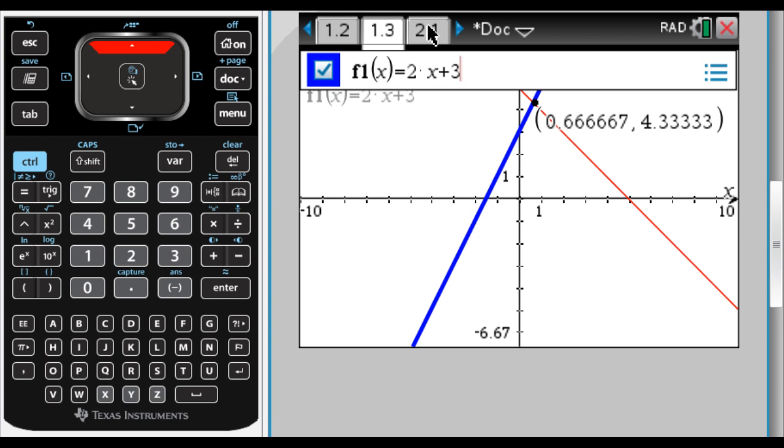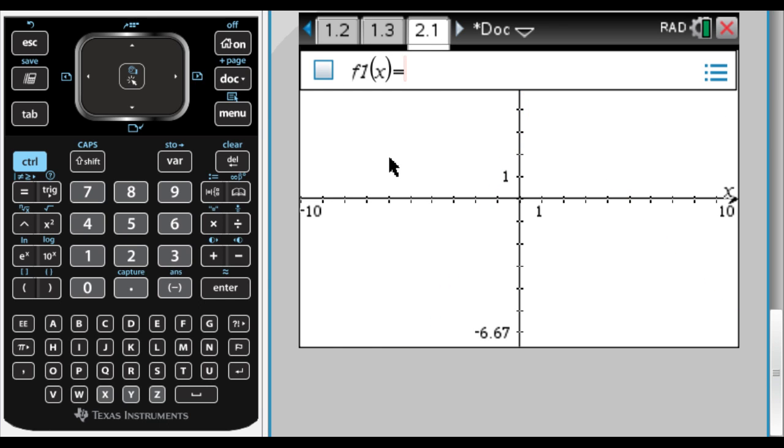So 1.3 has to do with the first problem that I was working on, and 2.1, totally new problem. What I'm going to do here is I am going to graph a quadratic, so I'm going to graph x squared minus, let's go minus 5x and plus 6, and see what we get. So I'm going to press enter.